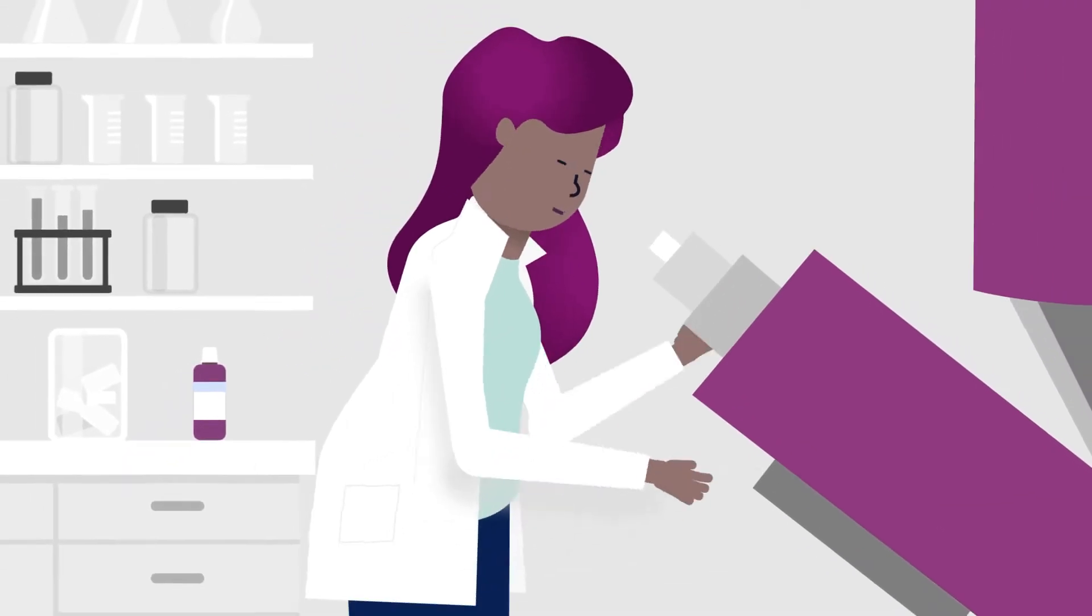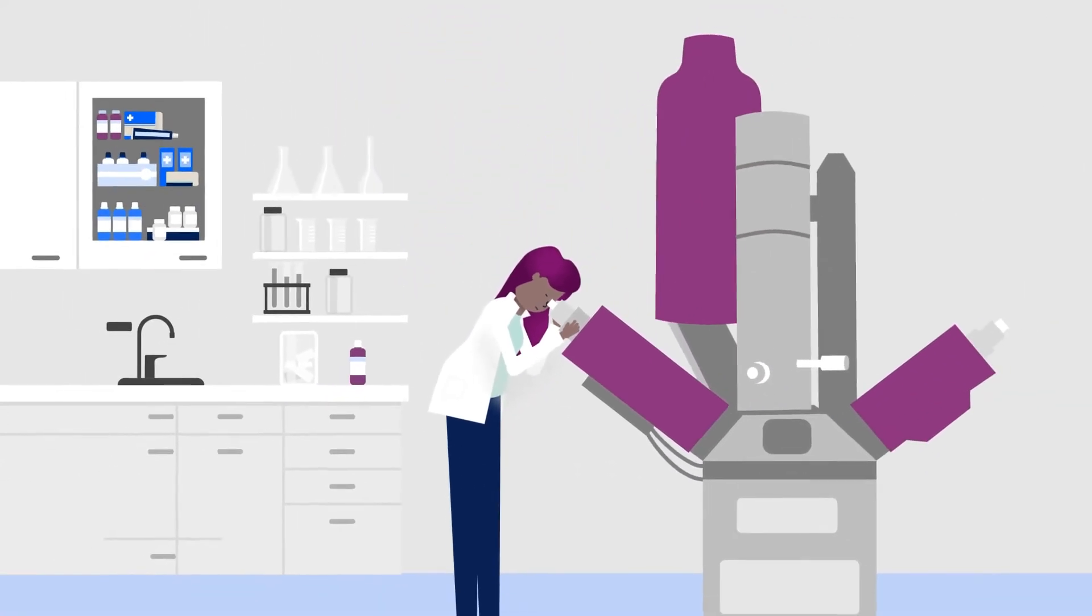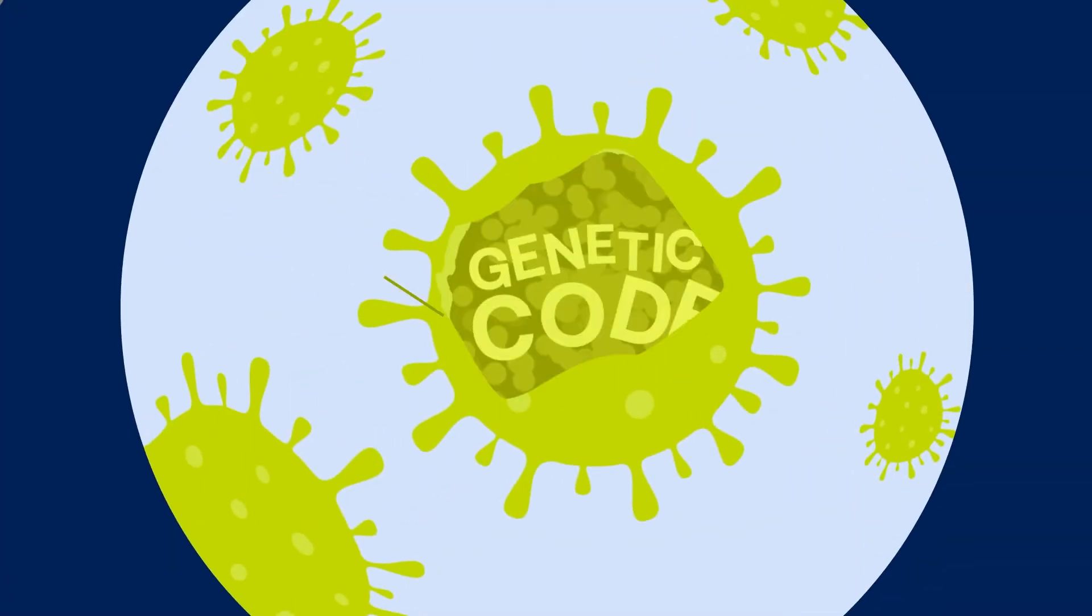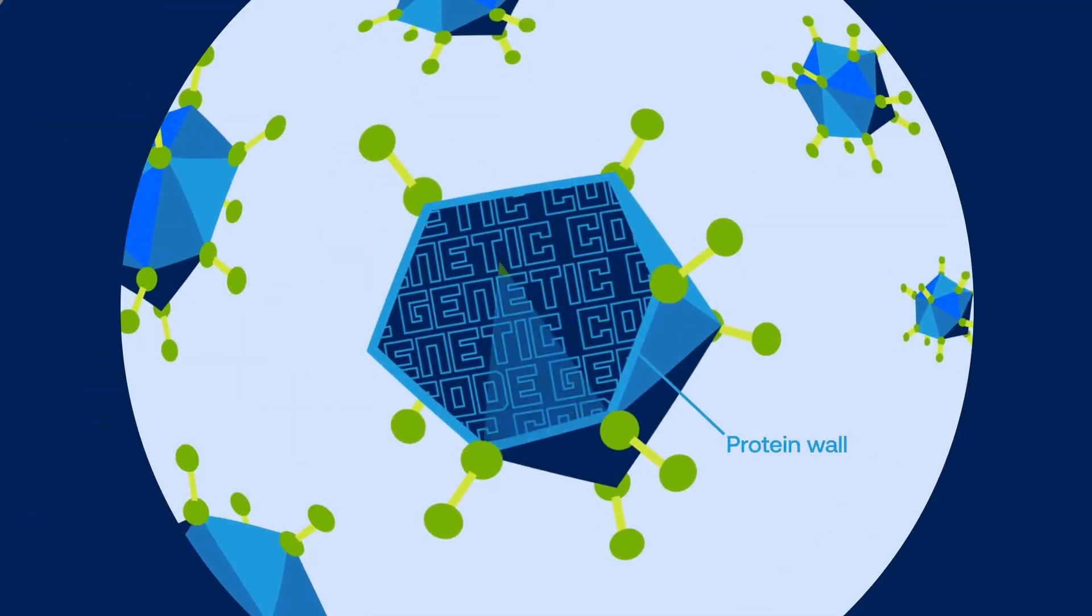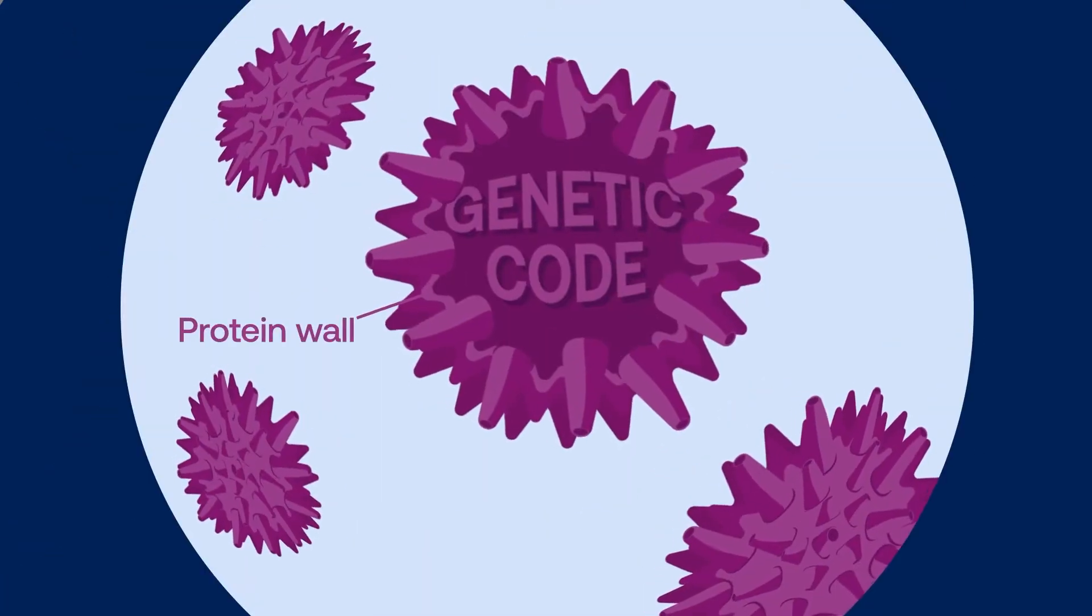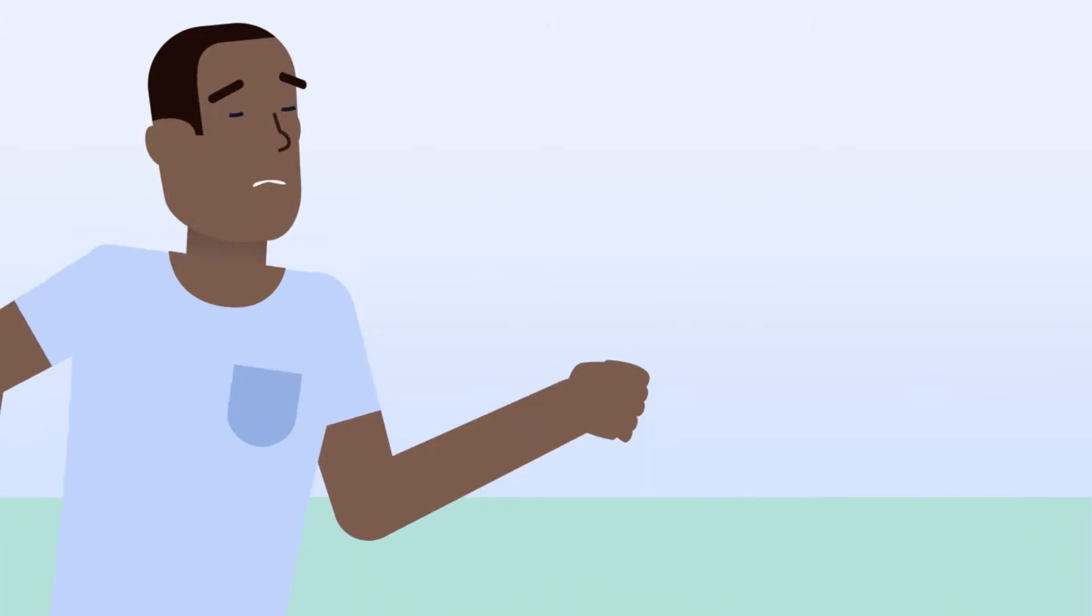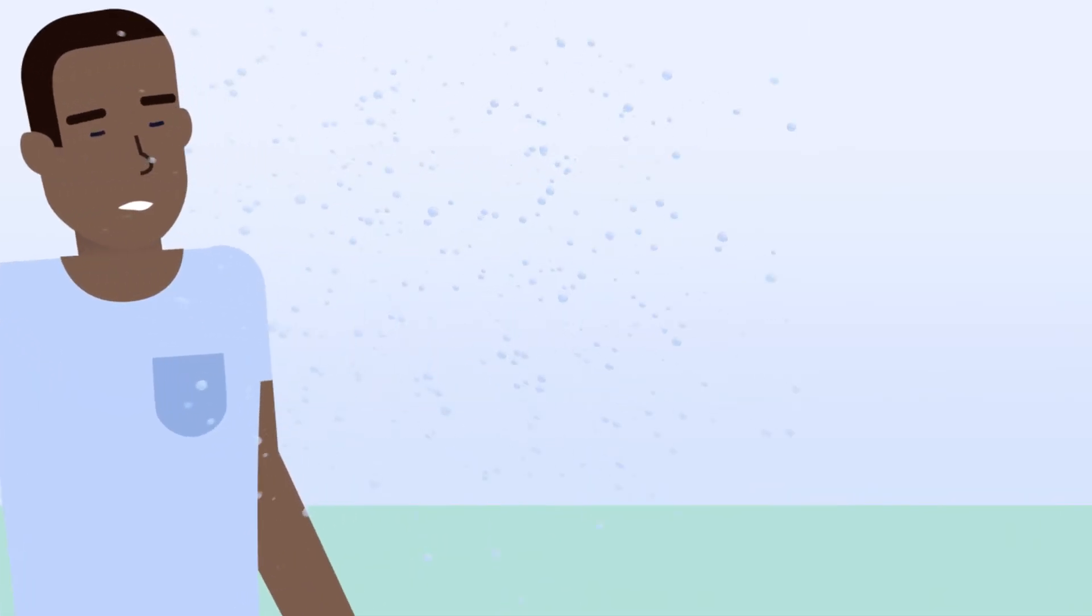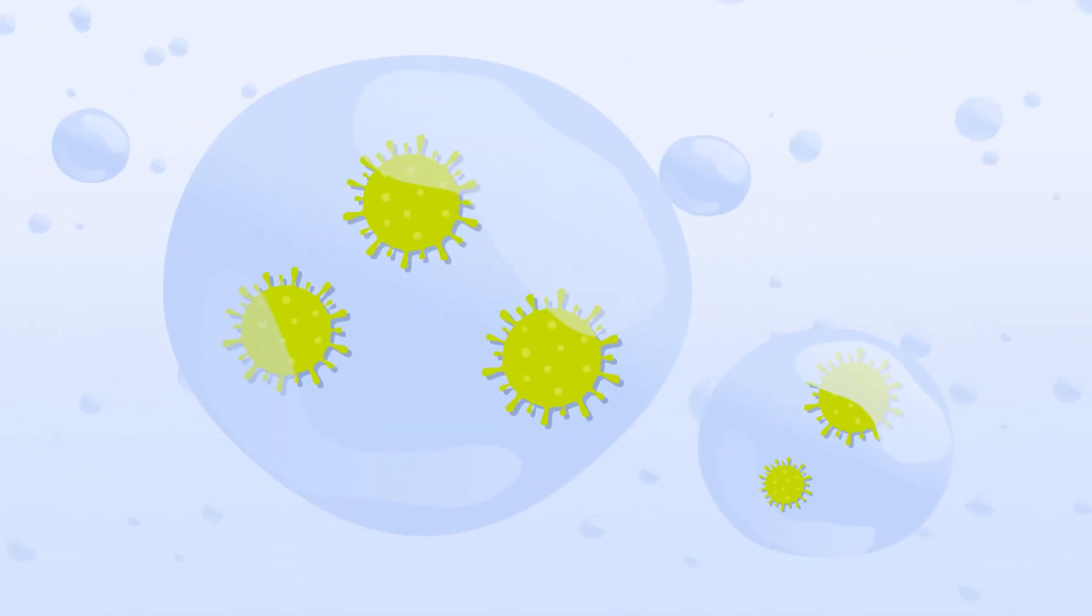A virus is so tiny it can only be seen with a special microscope. It consists of a small collection of genetic code surrounded by a protein wall. A respiratory virus can only replicate inside a living cell, which it has figured out how to effectively do.